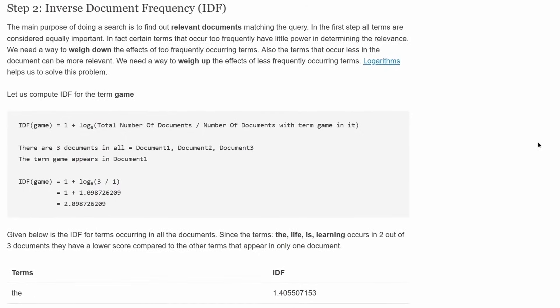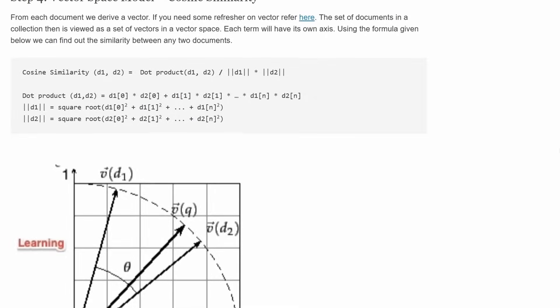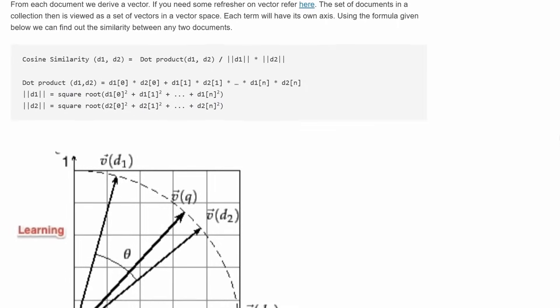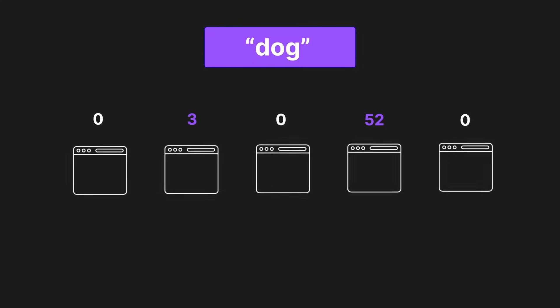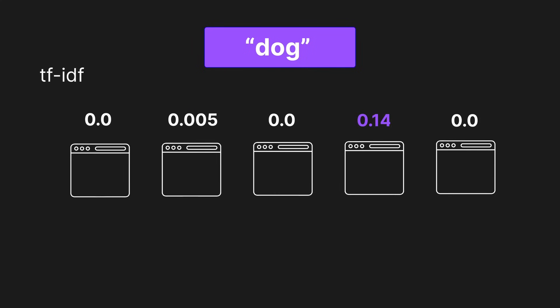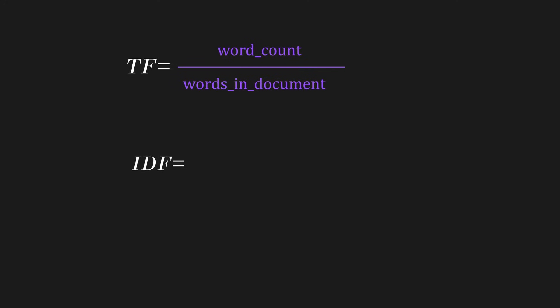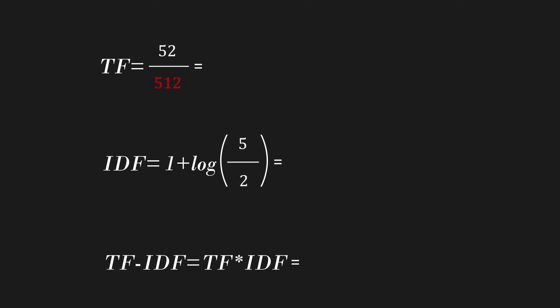I have to give a huge amount of credit to the Seeking Wisdom blog post by Viana. They did an amazing job of explaining how this entire system works in a really coherent way. To demonstrate how this works: if the word 'dog' only appeared on a few web pages but many times on one of them, the TF-IDF calculation would give that particular word a higher score for that web page. Here is the equation if you're interested, and also an example calculation.